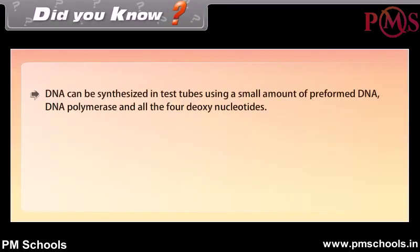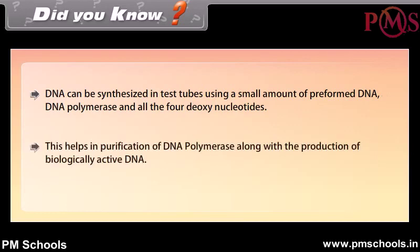DNA can be synthesized in test tubes using a small amount of preformed DNA, DNA polymerase, and all 4 deoxynucleotides. This helps in the purification of DNA polymerase along with the production of biologically active DNA.